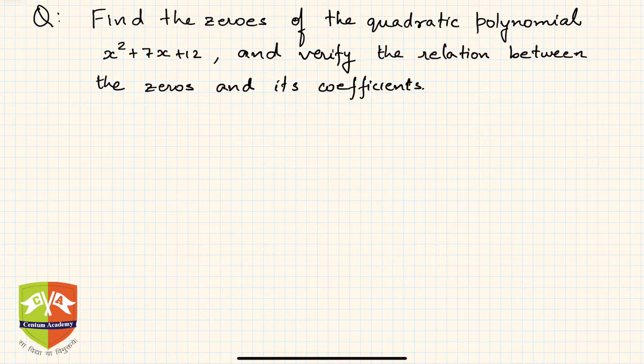Hi friends, welcome to this problem-solving session on polynomials. The question is: find the zeros of the quadratic polynomial x² + 7x + 12, and verify the relation between the zeros and its coefficients.